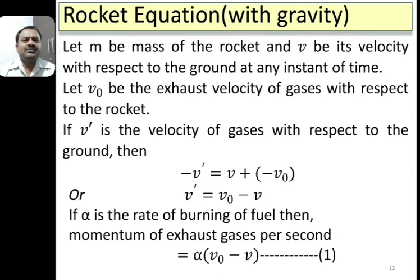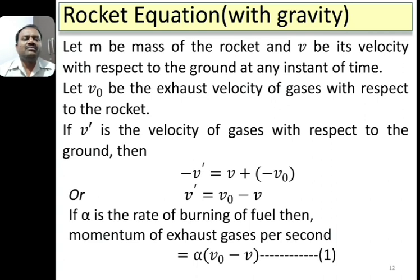Moving on to the derivation of the single stage rocket equation with gravity. Consider a rocket moving along a straight line in the presence of gravity. Let m be the mass of the rocket and v its velocity with respect to the ground at any instant. Let v0 be the exhaust velocity of gases with respect to the rocket. If v' is the velocity of gases with respect to the ground, then −v' = v + (−v0), so v' = v0 − v. If alpha is the rate of burning of fuel, then momentum of exhaust gases per second = alpha × (v0 − v). Let this be equation 1.